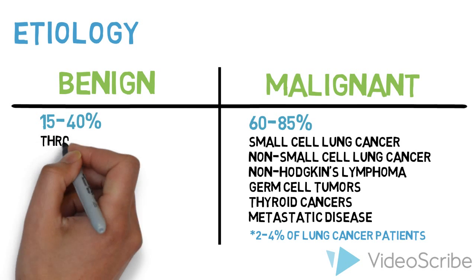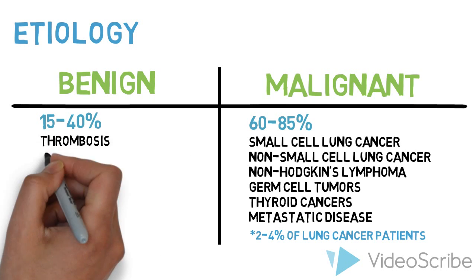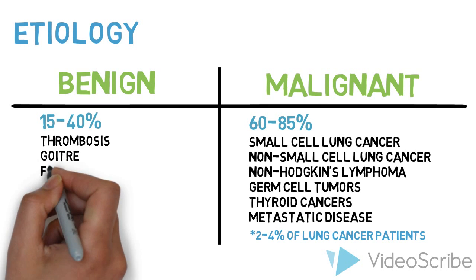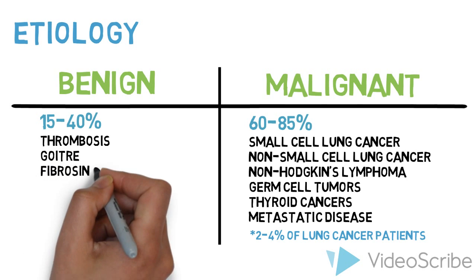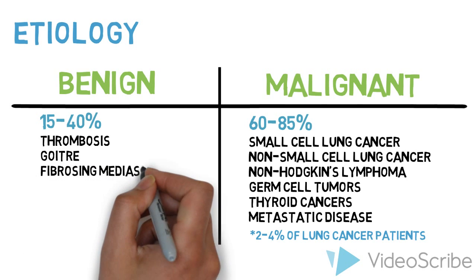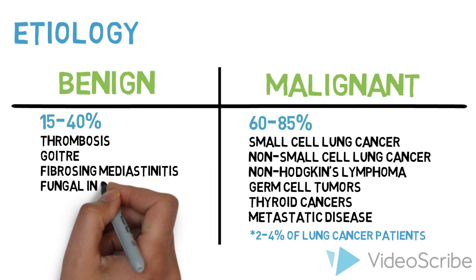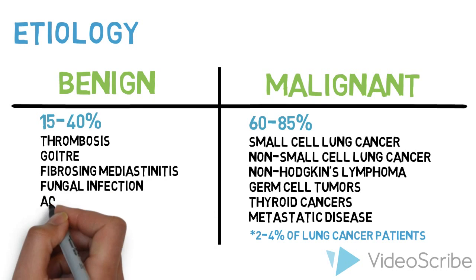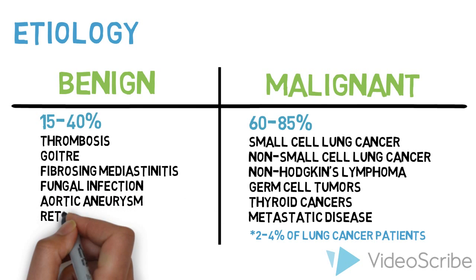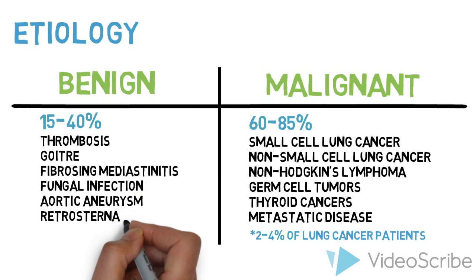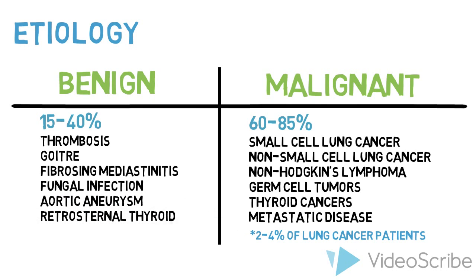Benign causes of SVC syndrome include thrombosis, goiter, fibrosing mediastinitis, fungal infection, aortic aneurysm, and retrosternal thyroid.